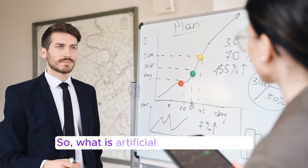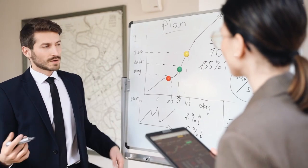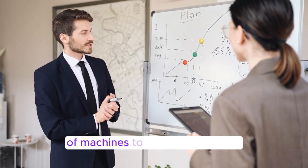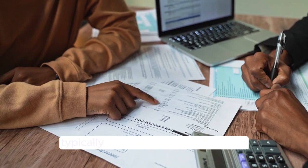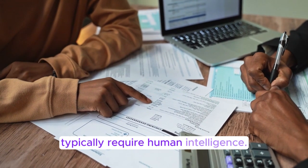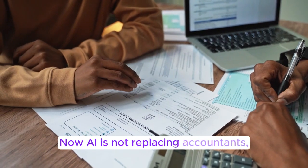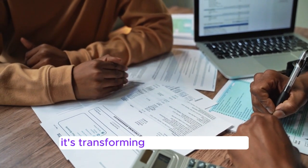So what is artificial intelligence or AI? Well, it is the ability of machines to perform tasks that typically require human intelligence. Now, AI is not replacing accountants. It's transforming the way they work.